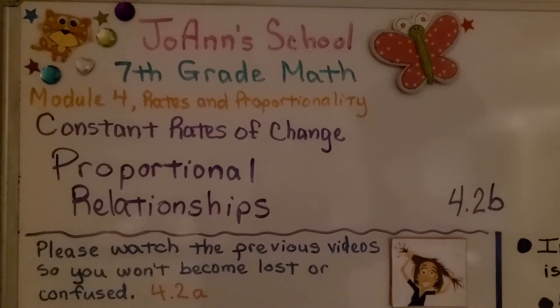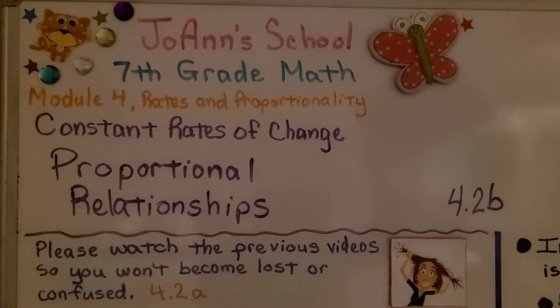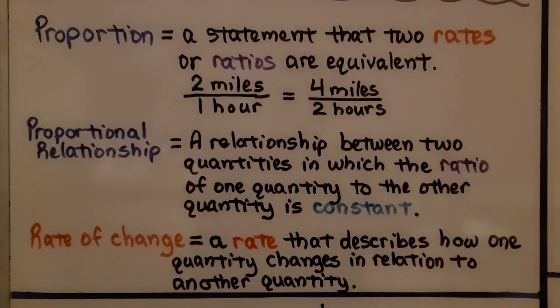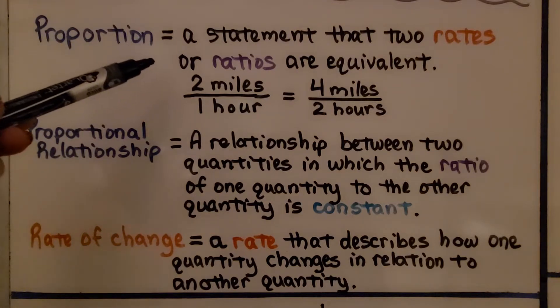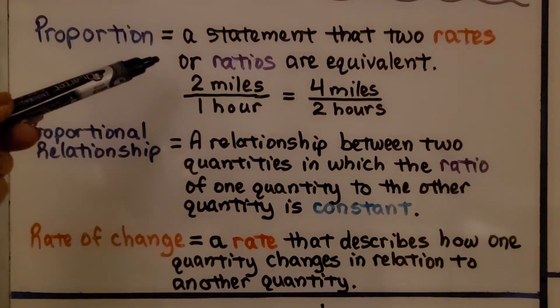Lesson 4.2b: Proportional Relationships. We're going to review these words quickly. A proportion is a statement that two rates or ratios are equivalent.